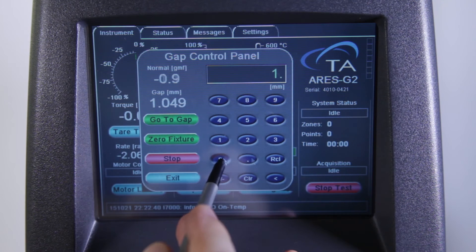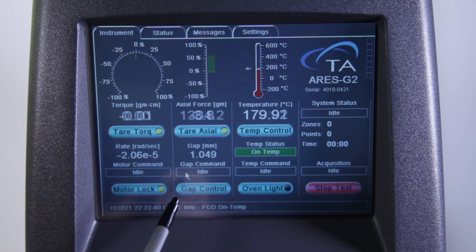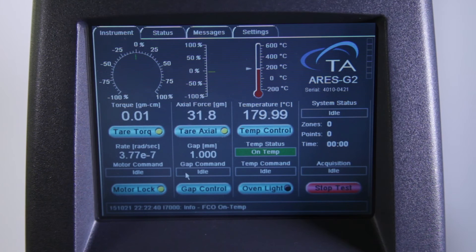Close the furnace and set the trim gap. Monitor the axial force. Once at trim gap, it is important to allow the axial force to relax fully prior to trimming.